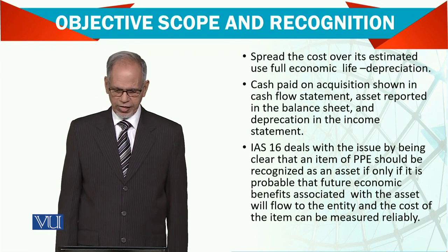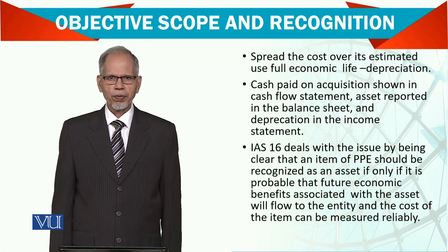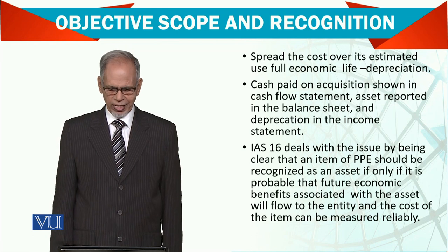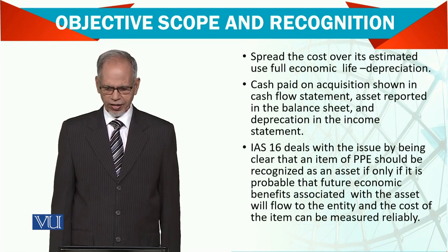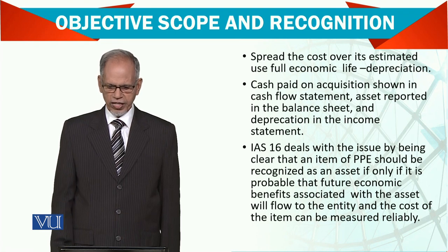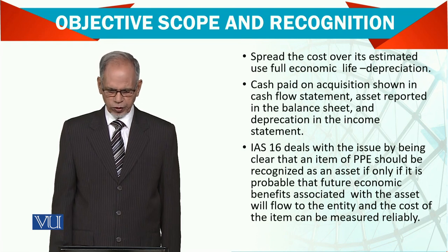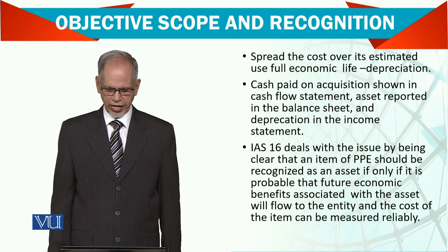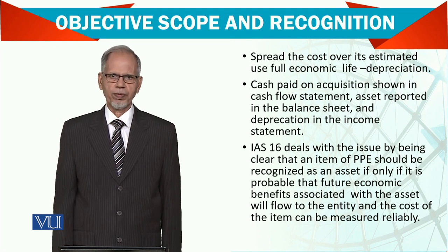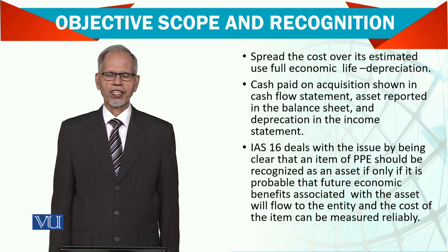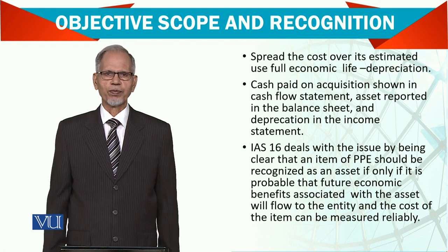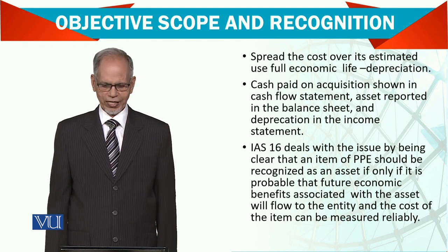IAS 16 deals with the issue by being clear that an item of property, plant and equipment should be recognized as an asset if, and only if, it is probable that the future economic benefits associated with the asset will flow to the entity, and the cost of the item can be measured reliably — because how the cost is measured is also very important.